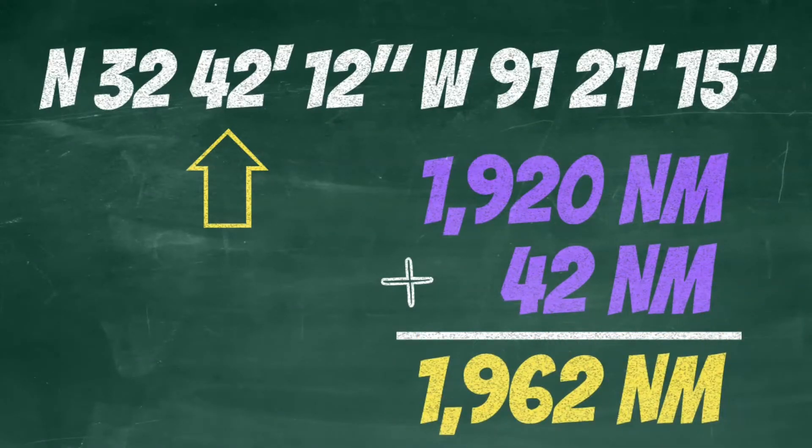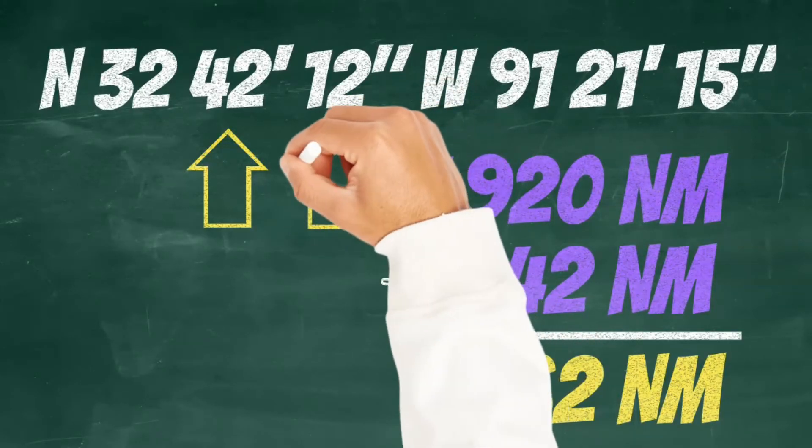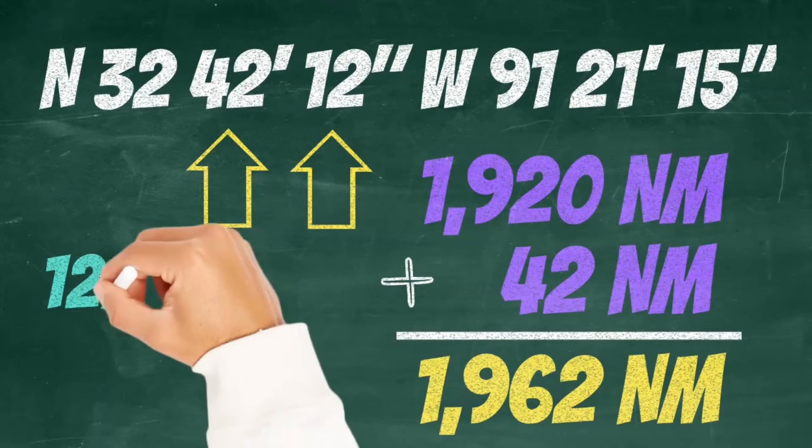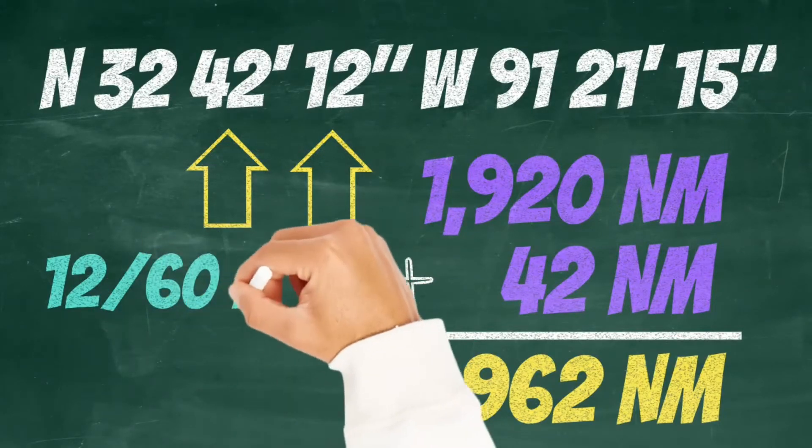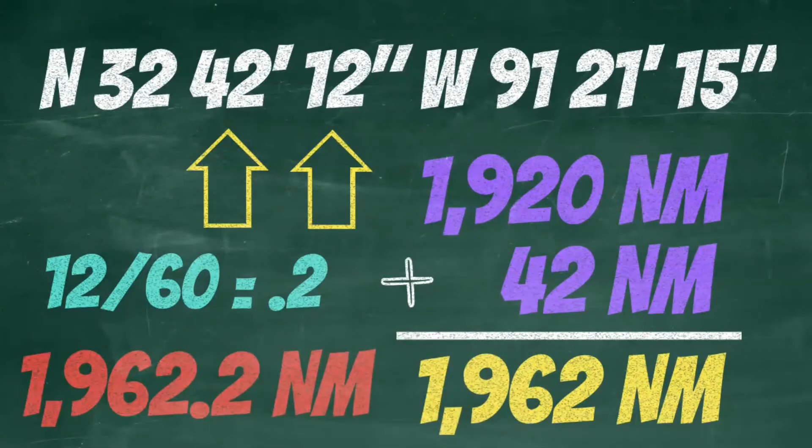Now this last line indicates our seconds. We've got 12 seconds here. That means 12 sixtieths of a nautical mile. And if you do the math that's 0.2 nautical miles. That means we're exactly 1,962.2 nautical miles north of the equator.